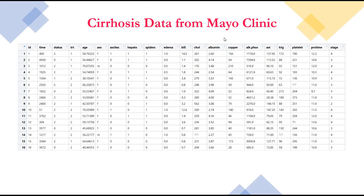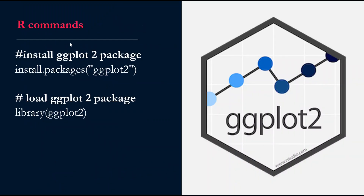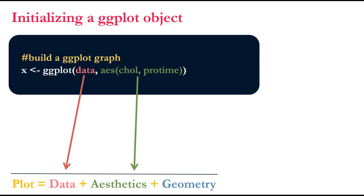As an example, we will be using the cirrhosis data from Mayo Clinic. We will use the two continuous variables cholesterol and pro time (prothrombin clotting time). To add additional information to the plot we will use sex and stage — the stage of the disease, one to four. First, if you haven't installed the ggplot package you need to install it and load it into R.